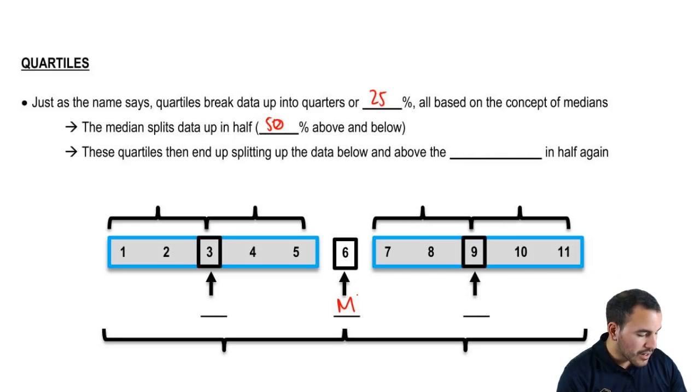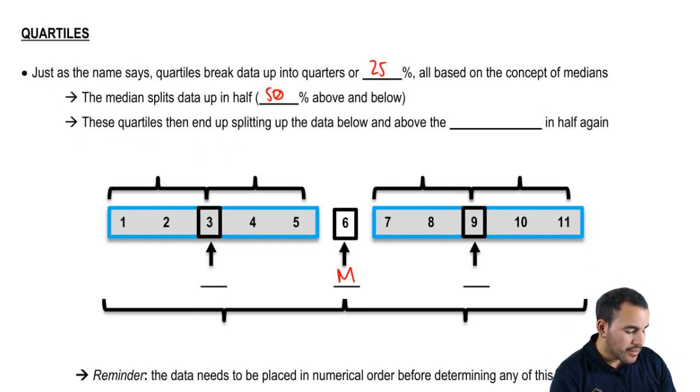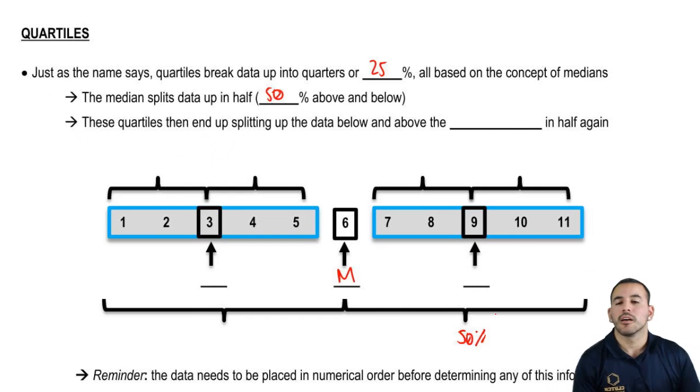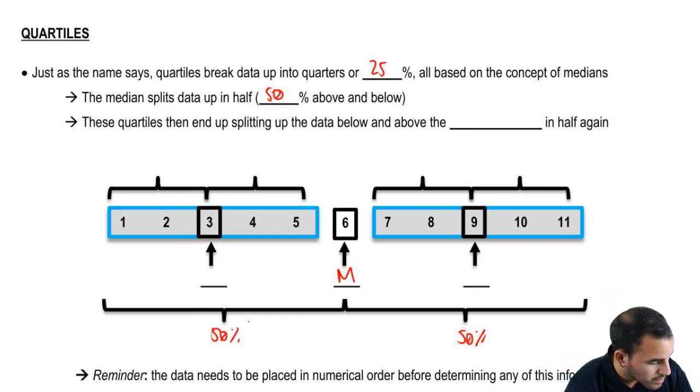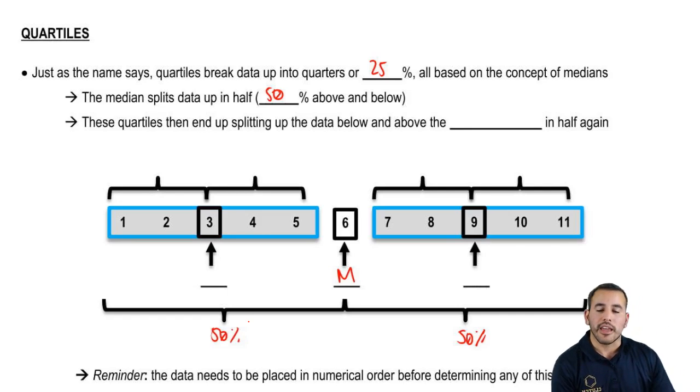So now we have 50% of the data above, 50% below, and that's the median. Now the quartiles end up splitting those two halves, those two 50%s, into half again. So it splits the numbers above and below the median in half again.